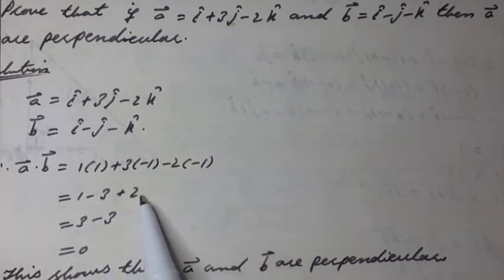It can be written as equal to 1 minus 3 plus 2, equal to 3 minus 3, equal to 0. This shows that a vector and b vector are perpendicular.